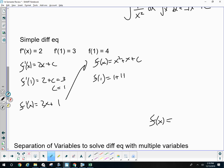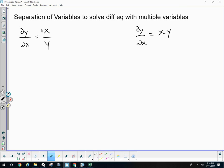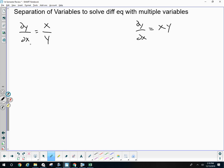I'm told f of 1 is 4. 1 plus 1 plus c equals 4. c is 2. f of x would be x squared plus x plus 2. But then we got into tougher differential equations where we had multiple variables. How we handled this, is we first separated our variables.